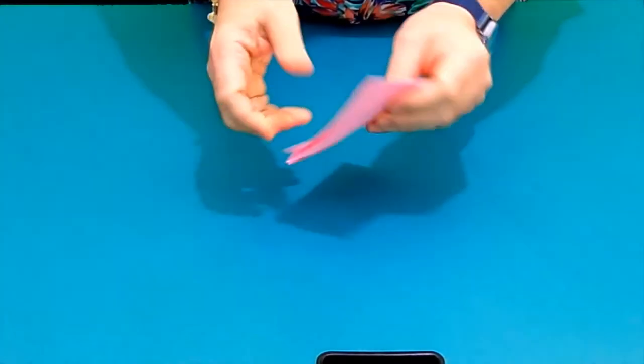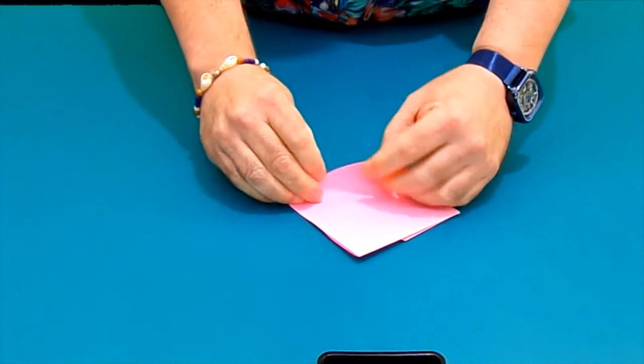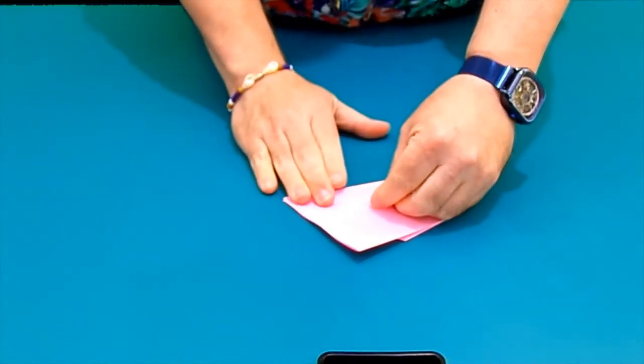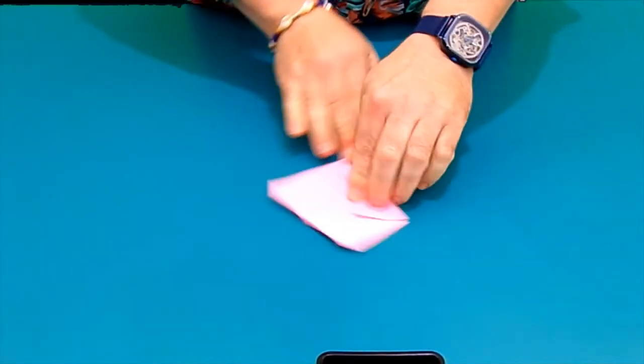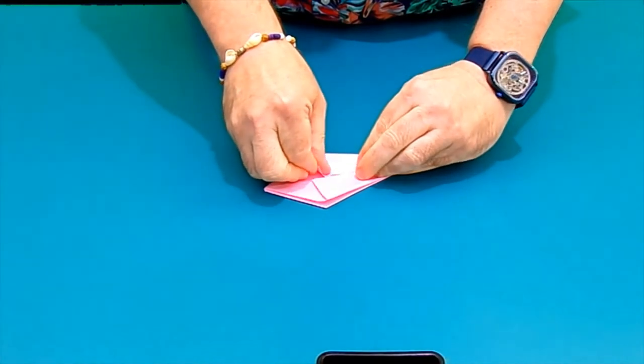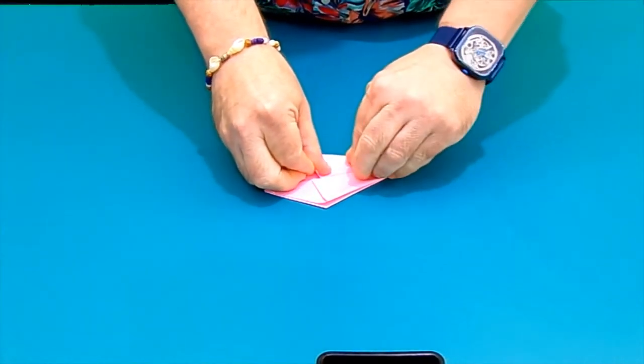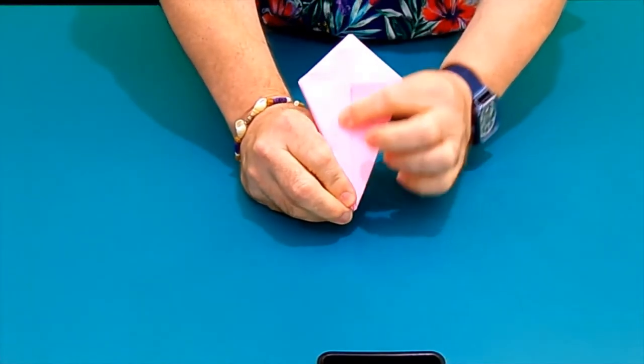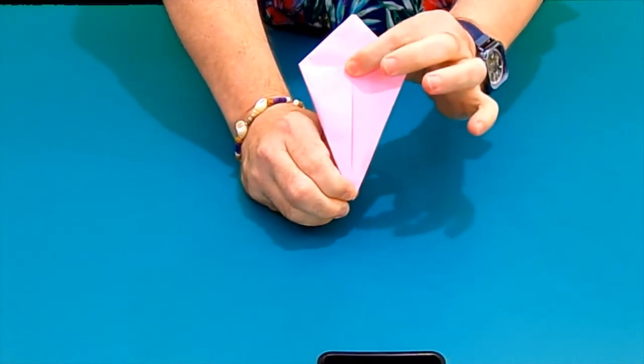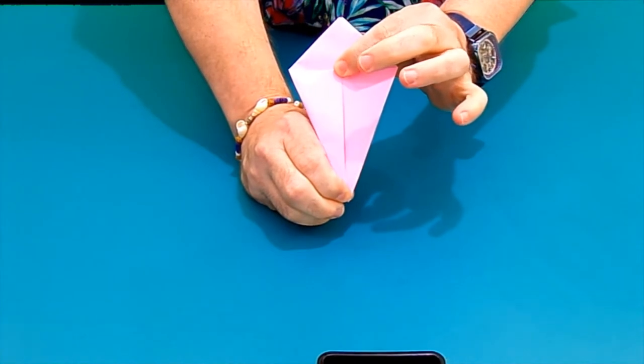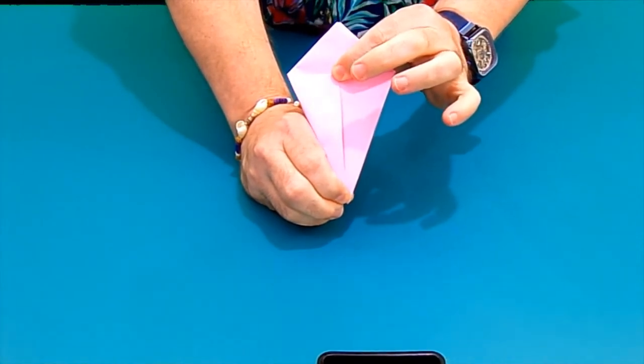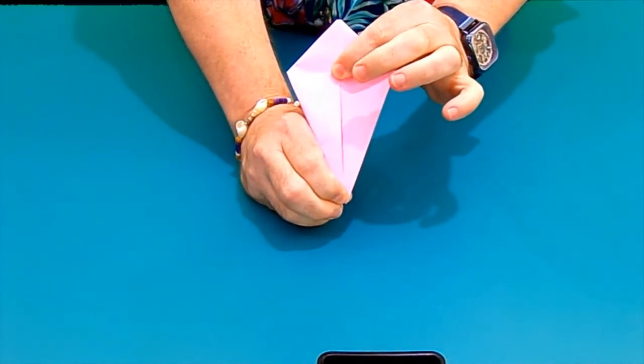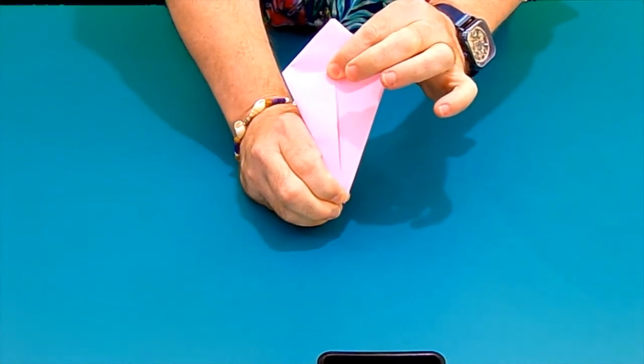Let's turn it over. And we're going to do the same thing again. Folding to the middle. And folding to the middle. Now we really have our kite shape.